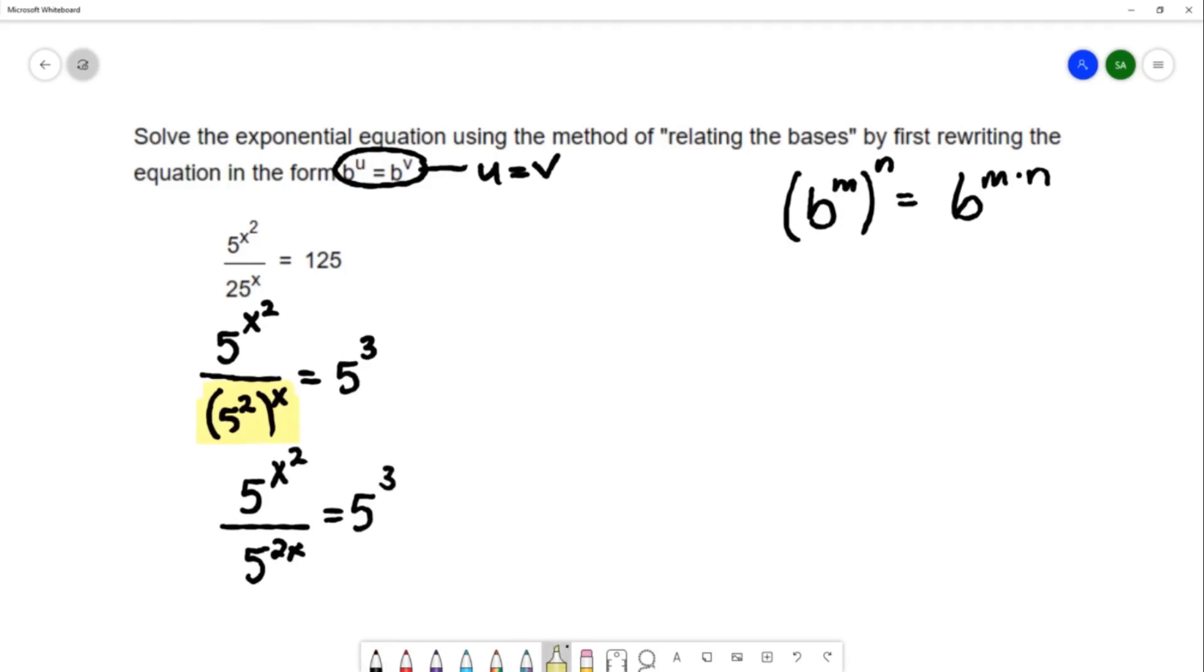I'm going to use another property of exponents to simplify the left-hand side of this equation. We're going to use a property called the quotient rule for exponents. The quotient rule deals with this situation where you have a base to a power divided by that same base to a power, so base b to the m over b to the n.